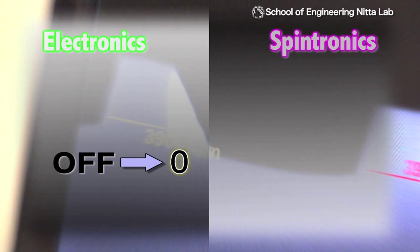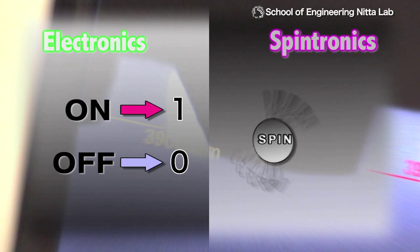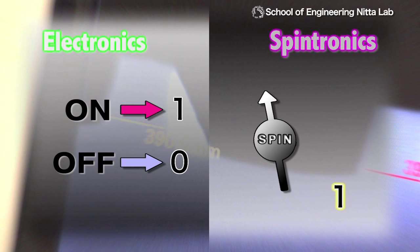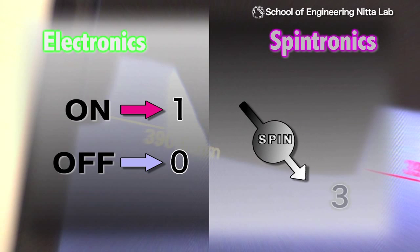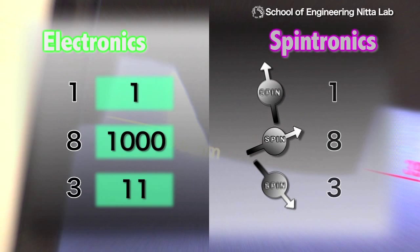In conventional electronics, information is processed by using the on and off states of current flow as 1 and 0 in calculations. To do these calculations in spintronics, the electron's spin direction can be treated as information. So information can be processed using just the number of spins in each direction.